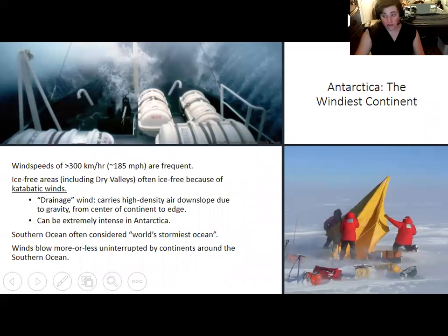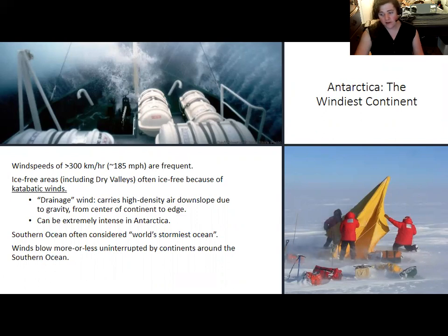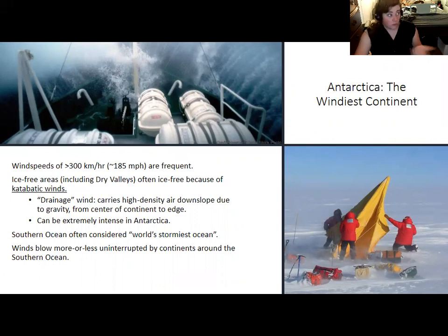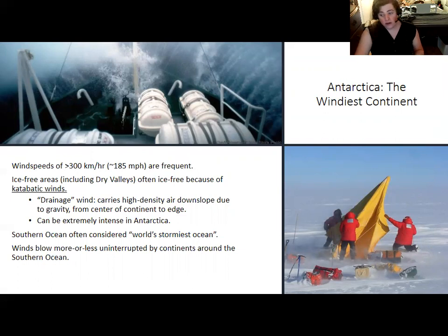Antarctica is considered the windiest continent largely because of average wind speeds and near-constant winds. Much of this relates to katabatic winds — pressure winds coming from the pole toward the coast — which we'll learn about next week. Air falls in a high-pressure zone at the pole and heads out toward the coasts from the higher interior to the lower coasts, creating constant wind. In valleys, you can get a wind-tunnel effect, which is actually why the dry valleys are dry — the channeled wind blows snow away before it can accumulate.